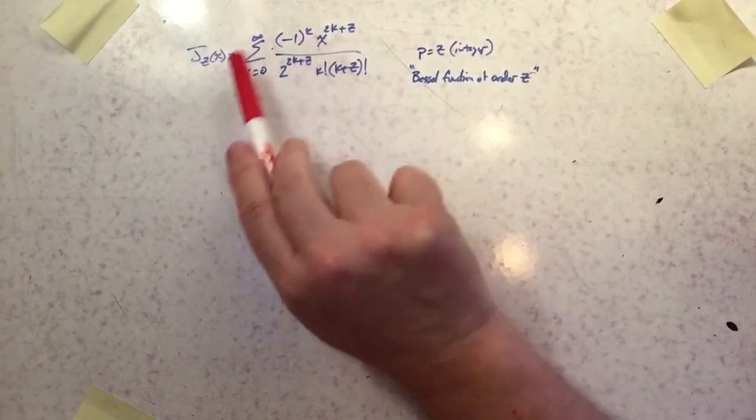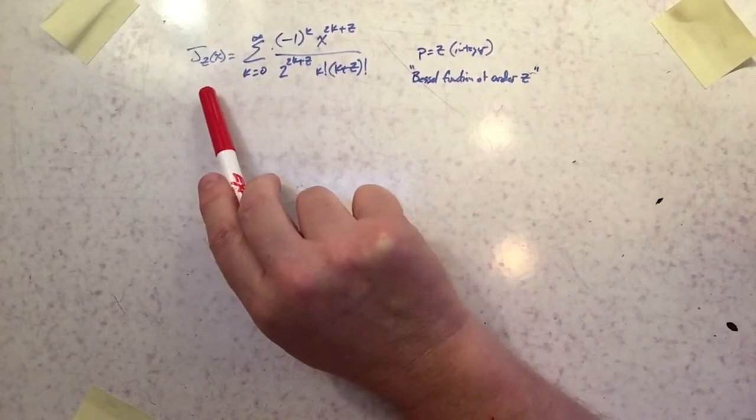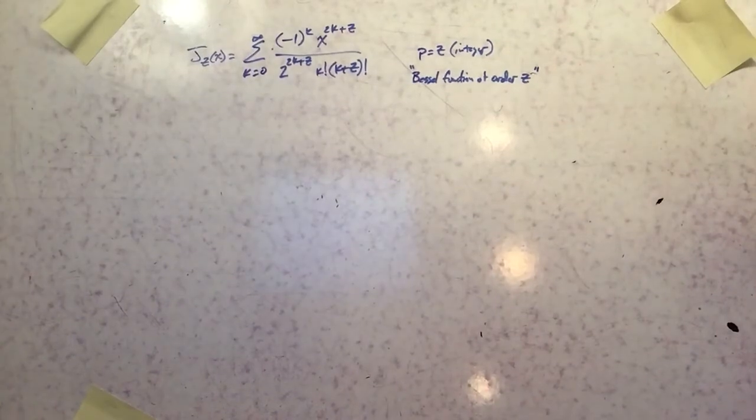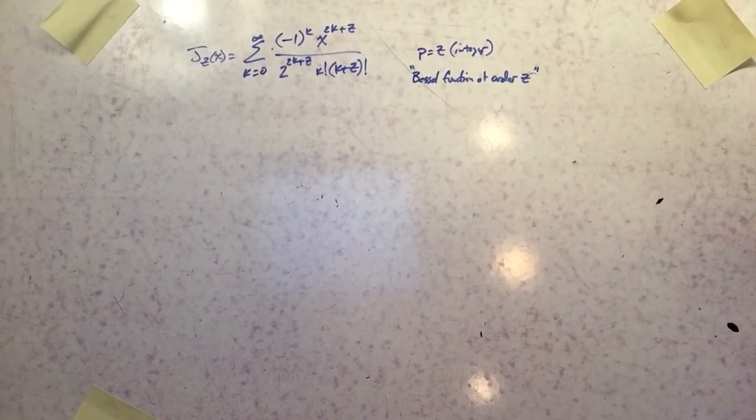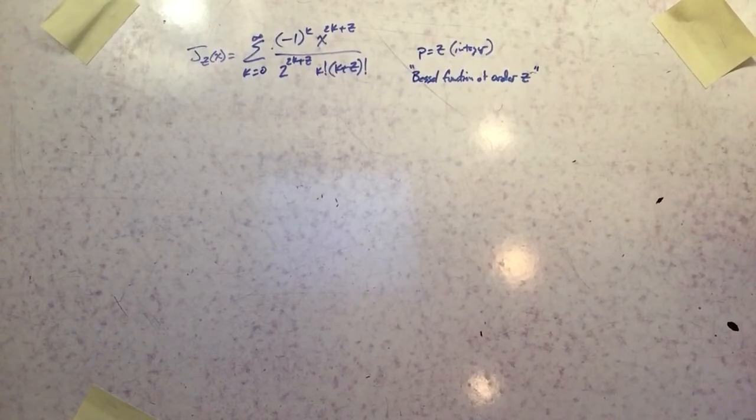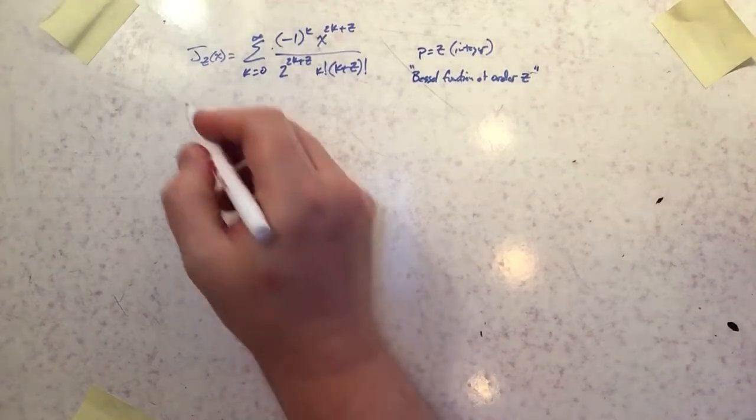In the last video we derived this from the Bessel equation and now we want to talk about what this guy looks like. You can use a CAS program to graph this so that you can see what it looks like for a good number of x's enough that it's really going to start to converge to itself. What we want to do is look at a couple of its values.